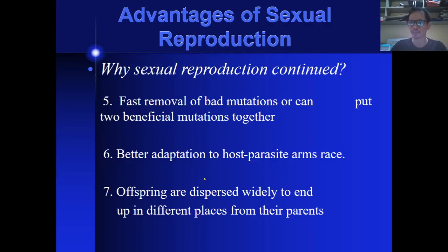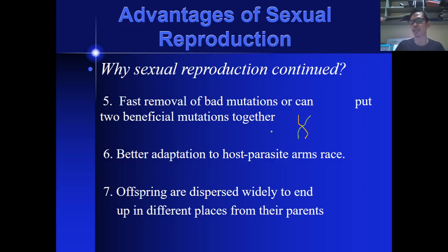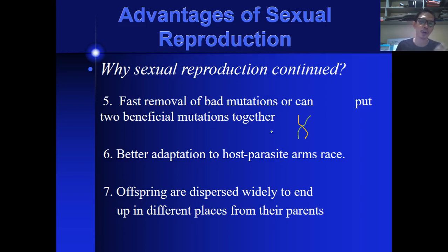Number five is fast removal of bad mutations. Due to the recombination of genes, you produce a unique individual. If one parent has a bad mutation, it will be completely masked by another trait, which is a good one. It will mask down that particular trait in that offspring. Over the next generation, and the generation after that, that bad mutation will likely disappear in the long run. Sexual reproduction is one way of removing bad mutations in organisms, and sometimes those bad mutations are illnesses harmful to the organism.